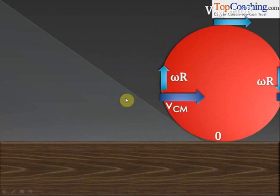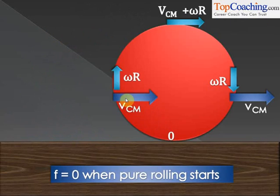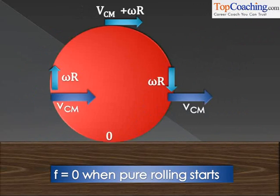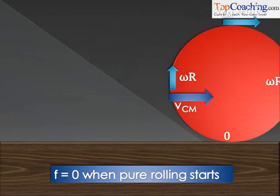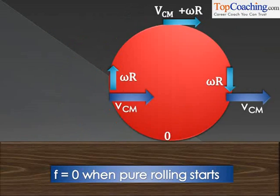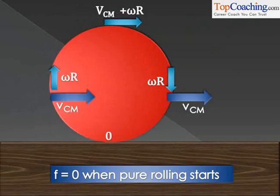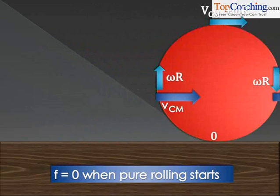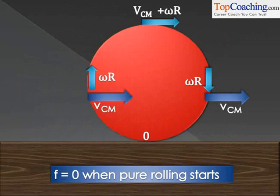And when pure rolling starts, friction stops acting. After all, the relative velocity between the point of contact of the ball and the floor has become zero, so why should friction act? So friction stops acting at this instant. This is how pure rolling is actually induced in real life.